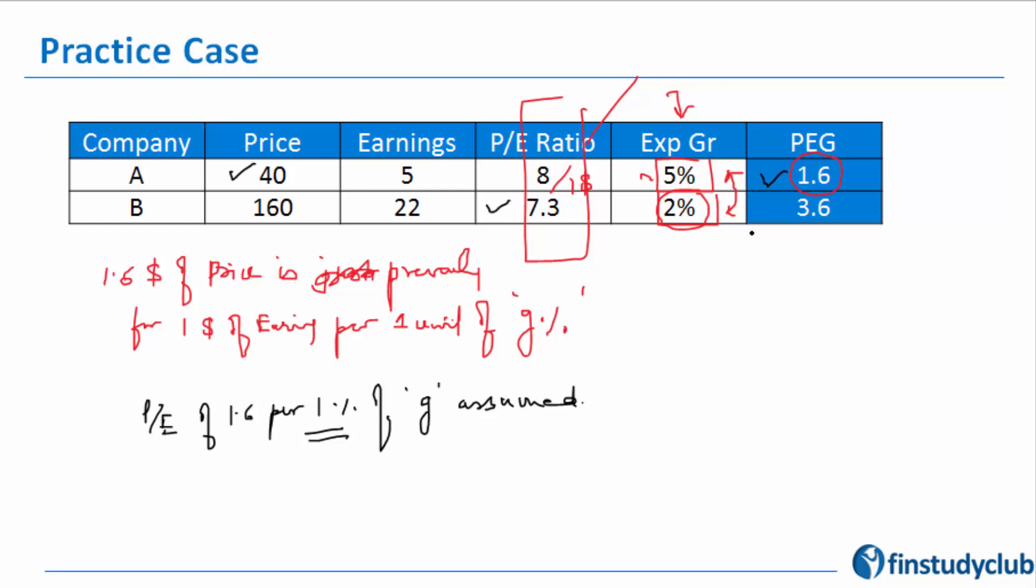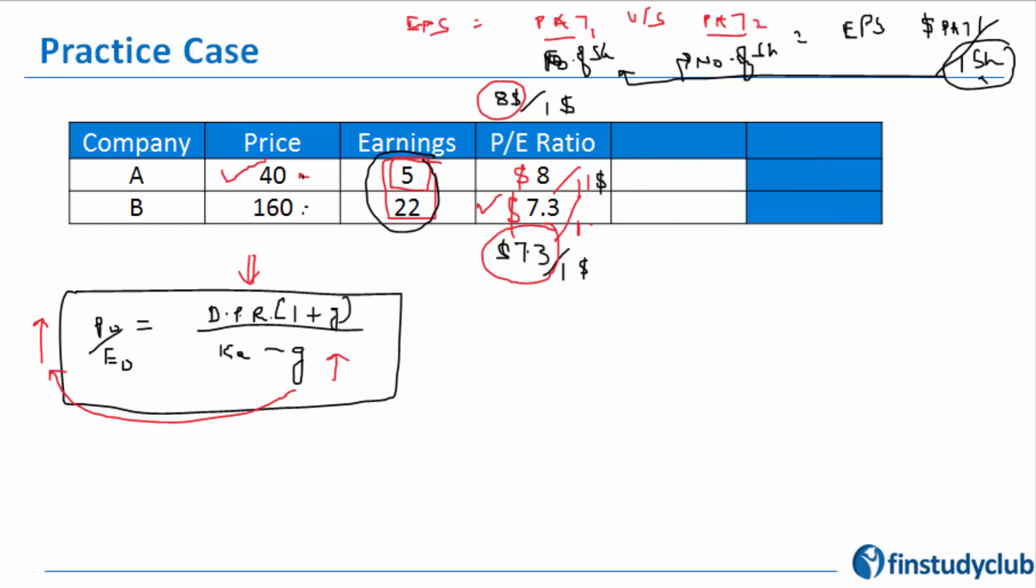A will be finally selected because the growth expected in A is 5%, and if I normalize that, the stock price is currently trading at 1.6 times at a 1% growth that I've assumed. That's about PEG.